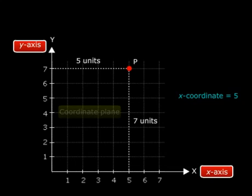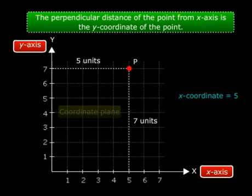And similarly, the perpendicular distance of the point from the x-axis is the y-coordinate of the point. So you can see that point P lies at a distance of seven units from the x-axis. So what is its y-coordinate? Yes, that is seven.